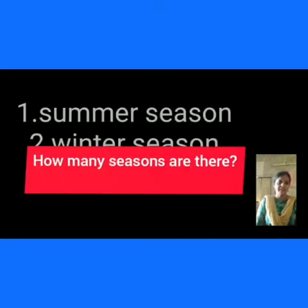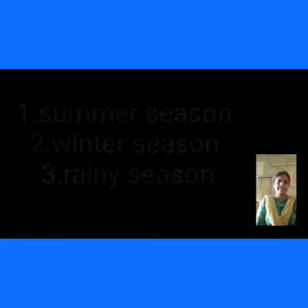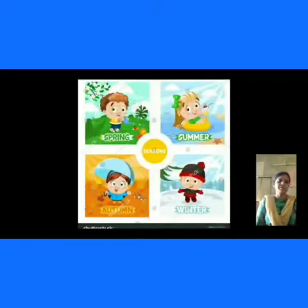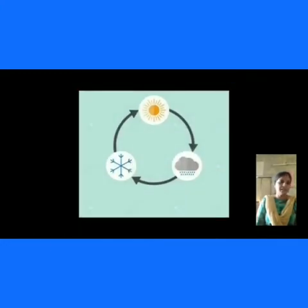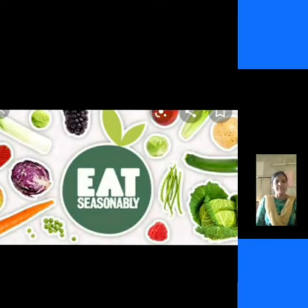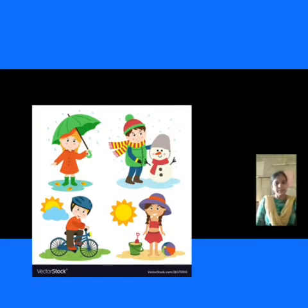Do you know, children, how many seasons are there? Generally we say summer season, rainy season, and winter season. In the surroundings we observe changes from winter to summer, summer to rainy, and rainy to winter. In this lesson we can learn about changing seasons and what type of food we eat in each season, what type of clothes we wear, and climate conditions.